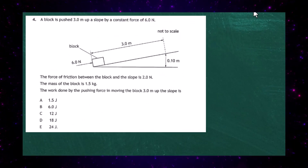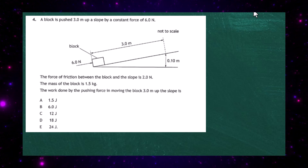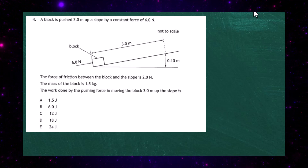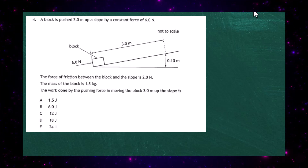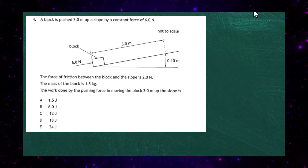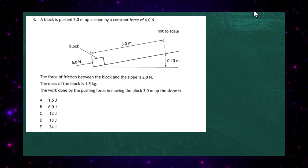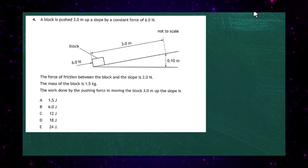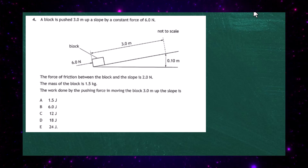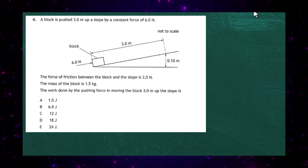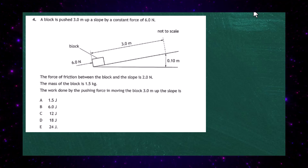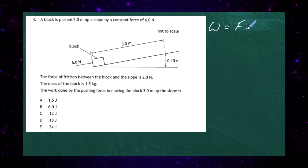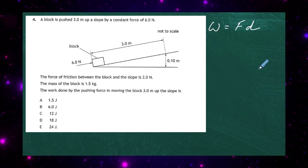Question four. A block is pushed three metres up a slope by a constant force of six newtons. The force of friction between the block and the slope is two newtons, and the mass of the block is 1.5 kilograms. We need to find the work done by the pushing force in moving the block three metres up the slope.